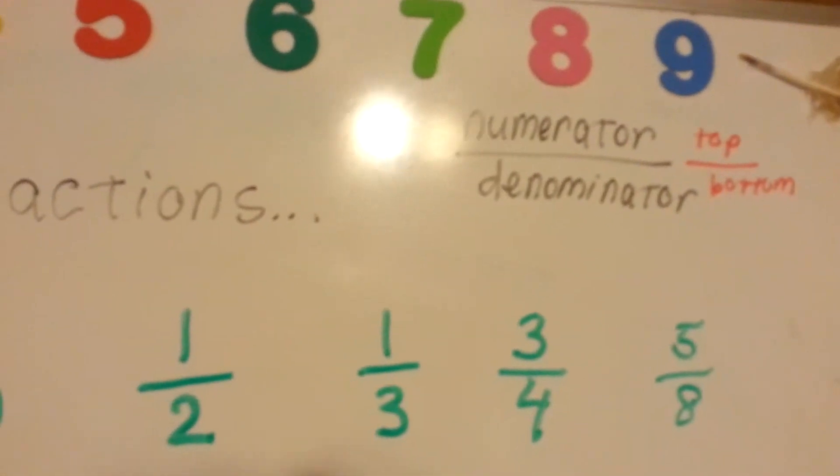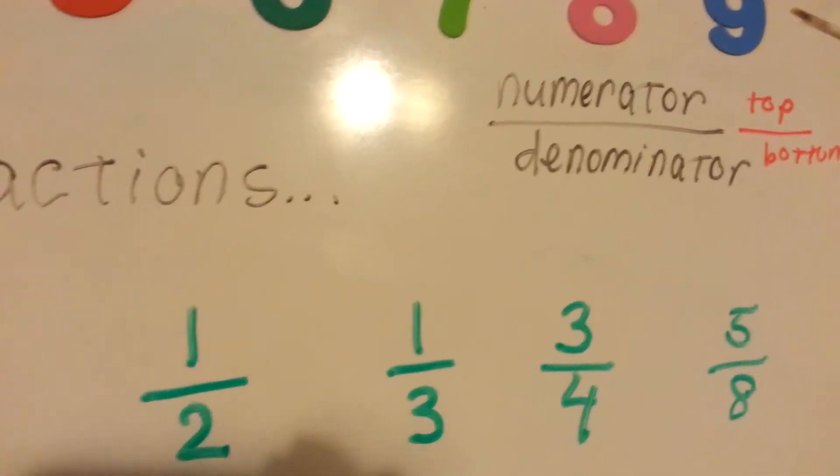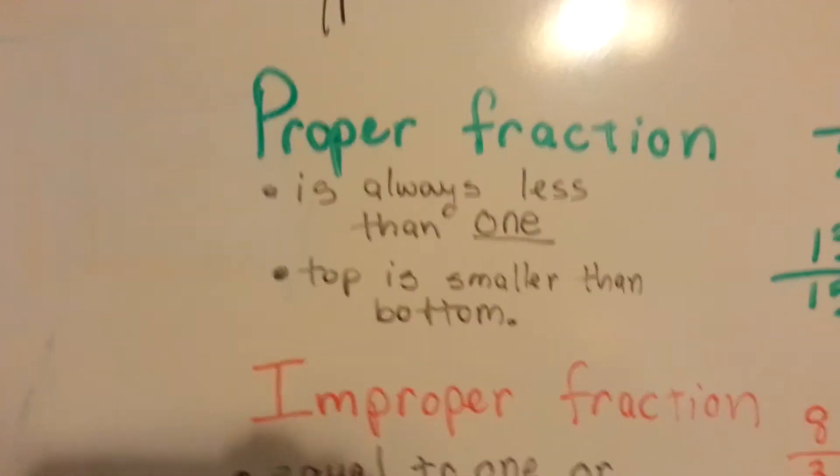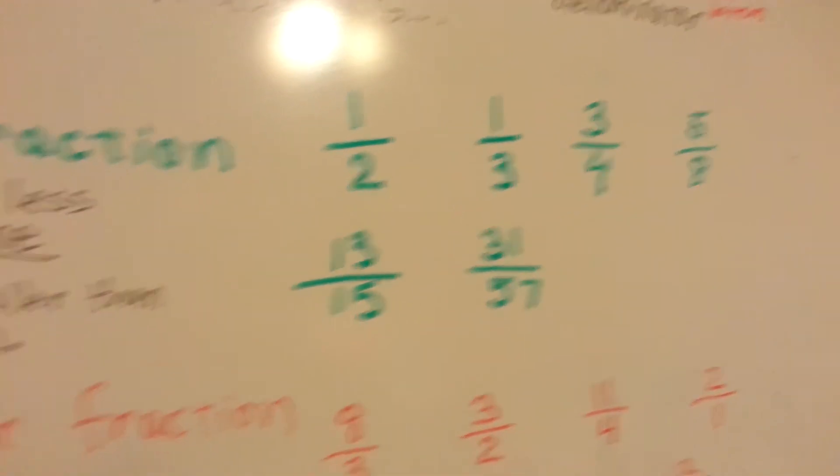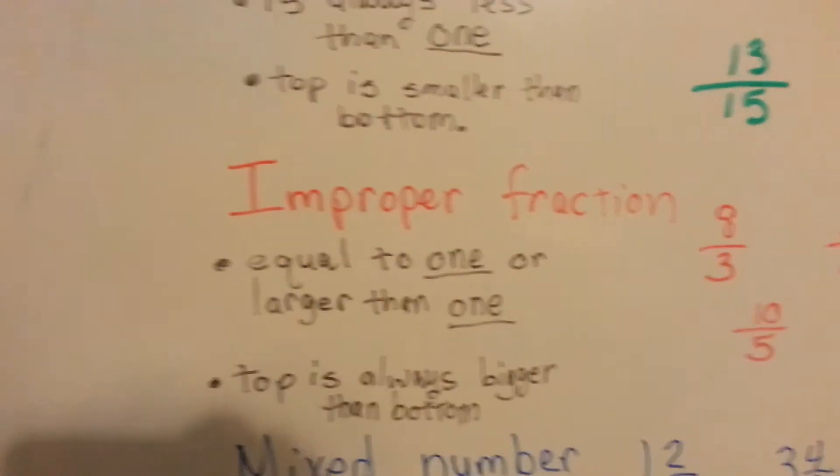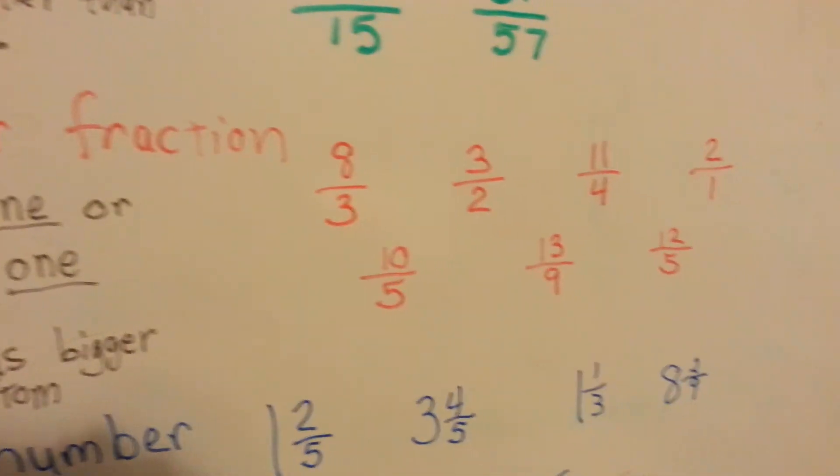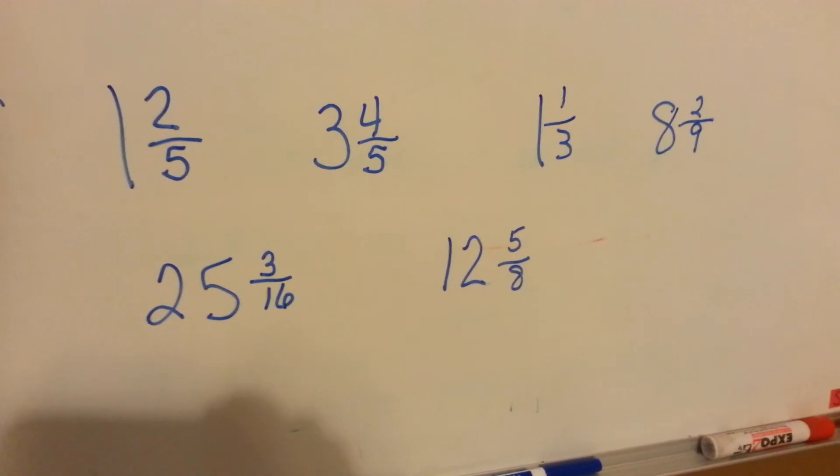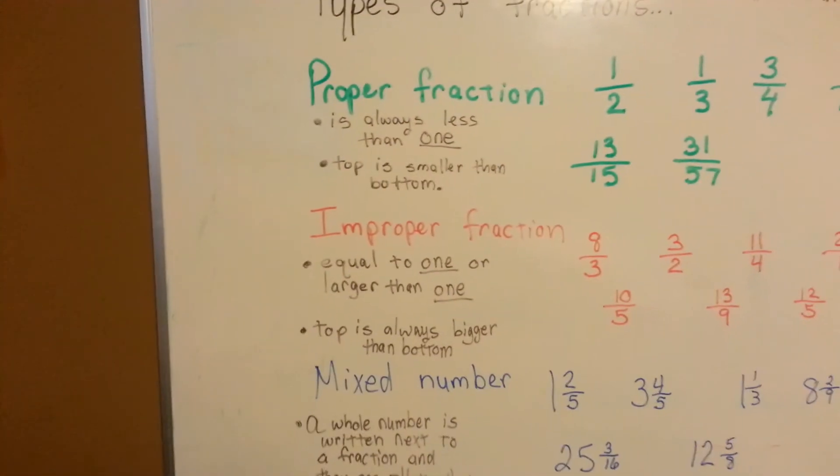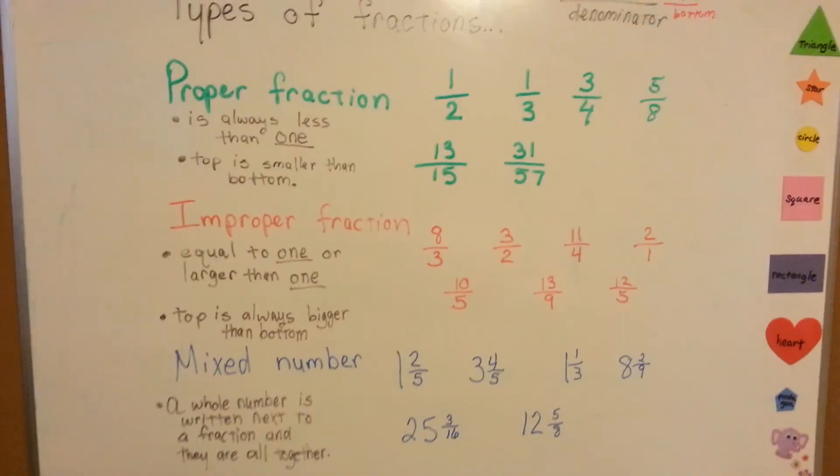Really quick, one more time. The numerator is on the top, denominator is on the bottom. We've got proper fractions that look like this, where the numerator is smaller than the denominator. We've got improper fractions that are equal to one or bigger than one, where the tops are bigger than the bottoms. And then, we have mixed numbers that look like this, that have a whole number next to a fraction. Those are the three types of fractions, and I hope that helped.